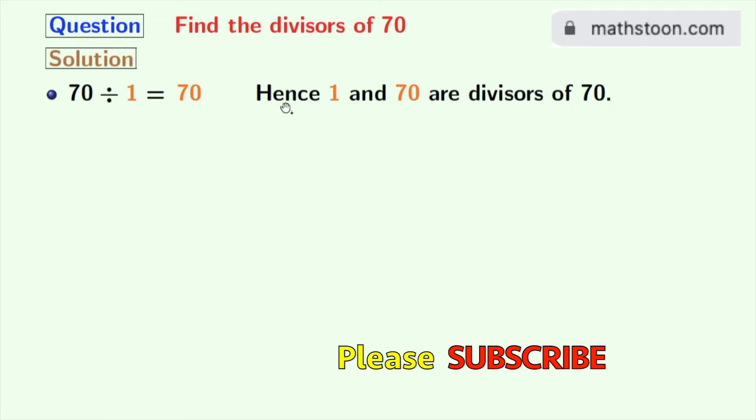70 divided by 2 is 35, hence 2 and 35 are the divisors of 70. Next numbers 3 and 4 do not divide 70, so we will move to 5.